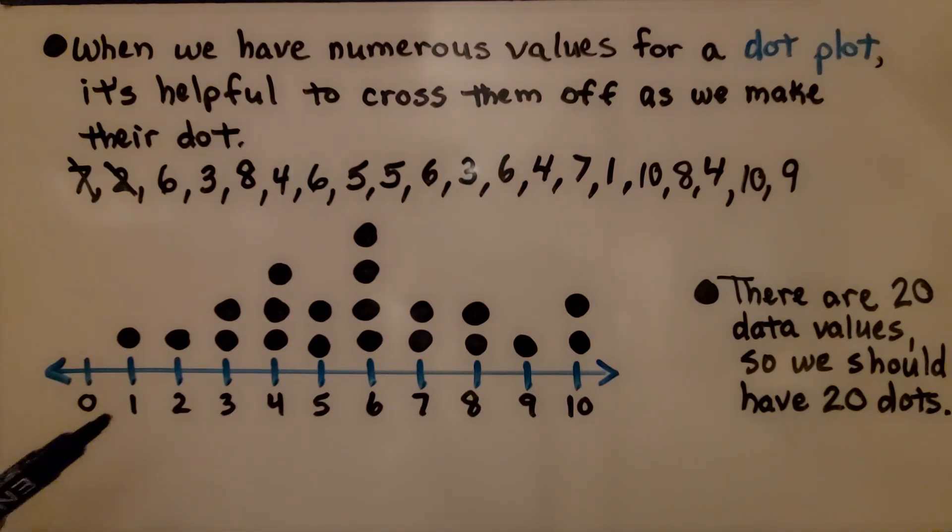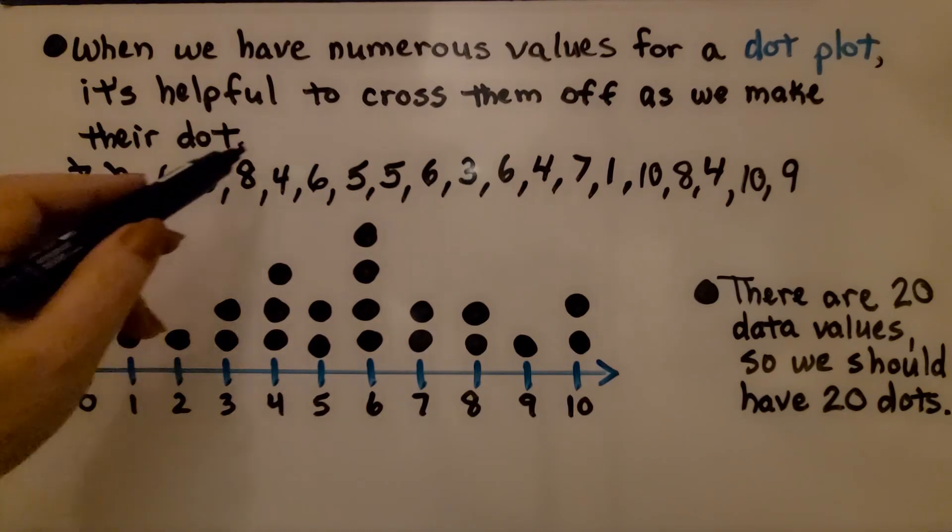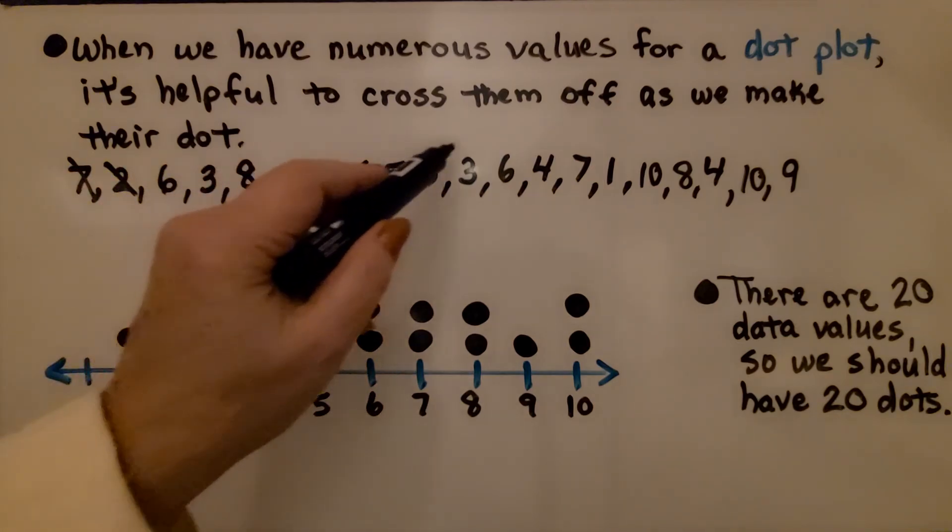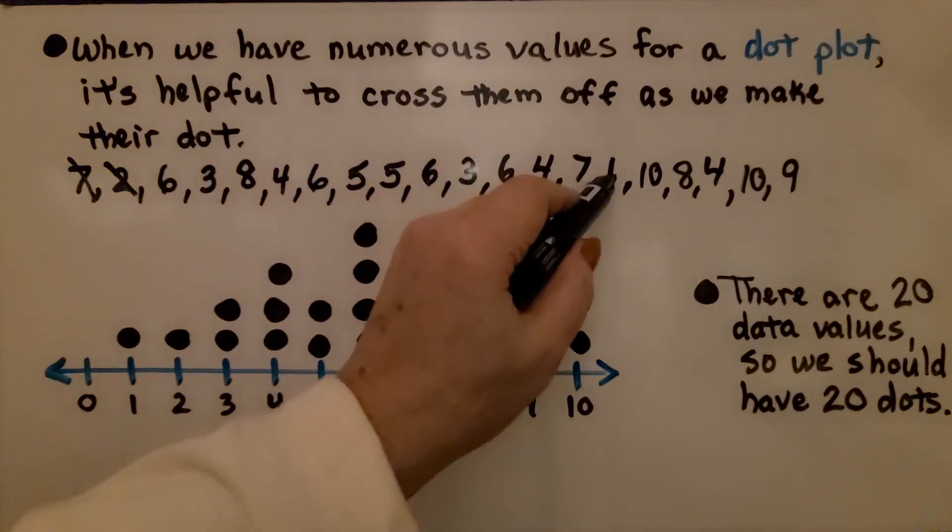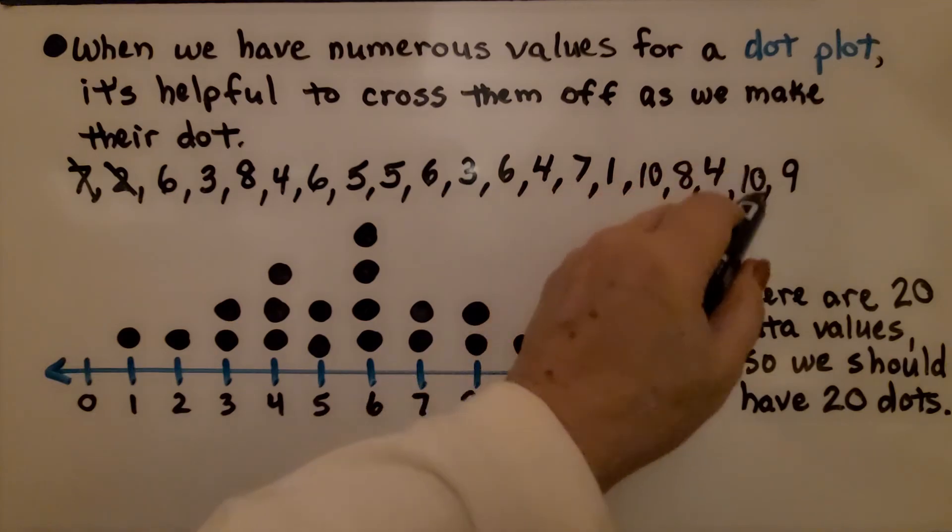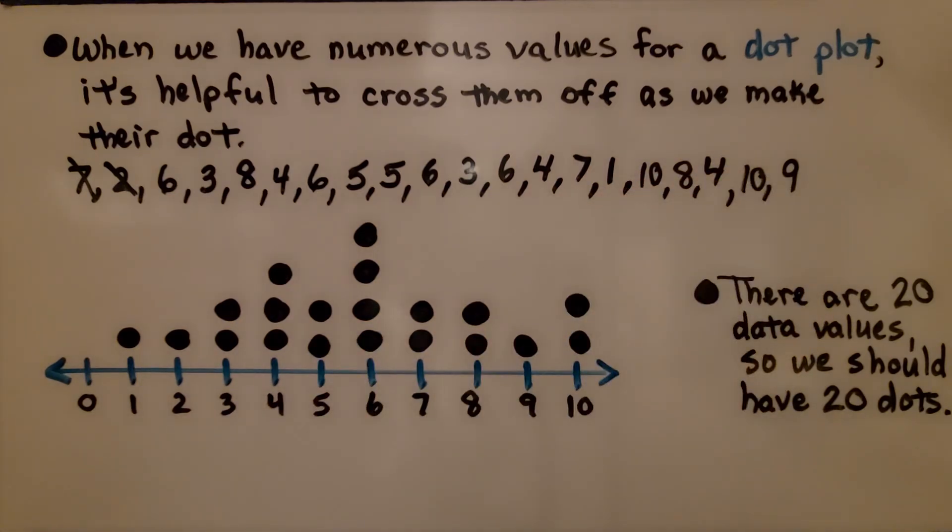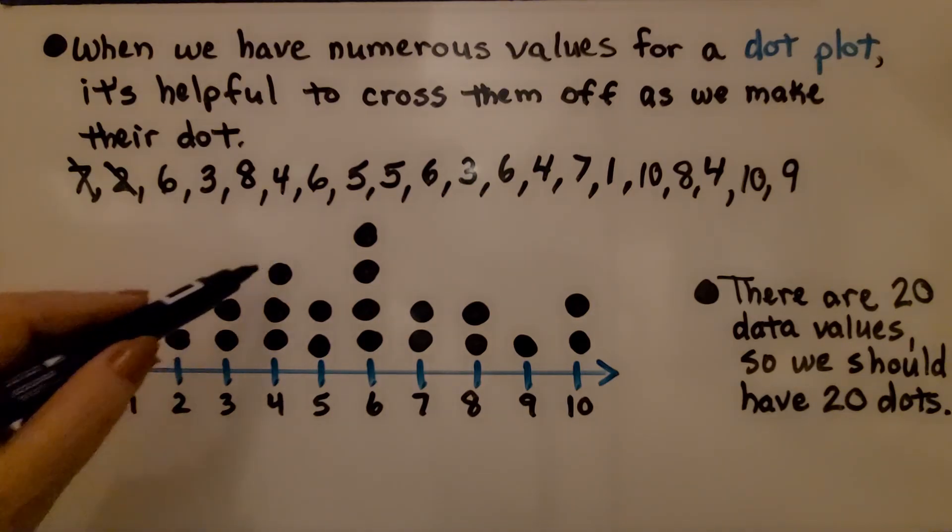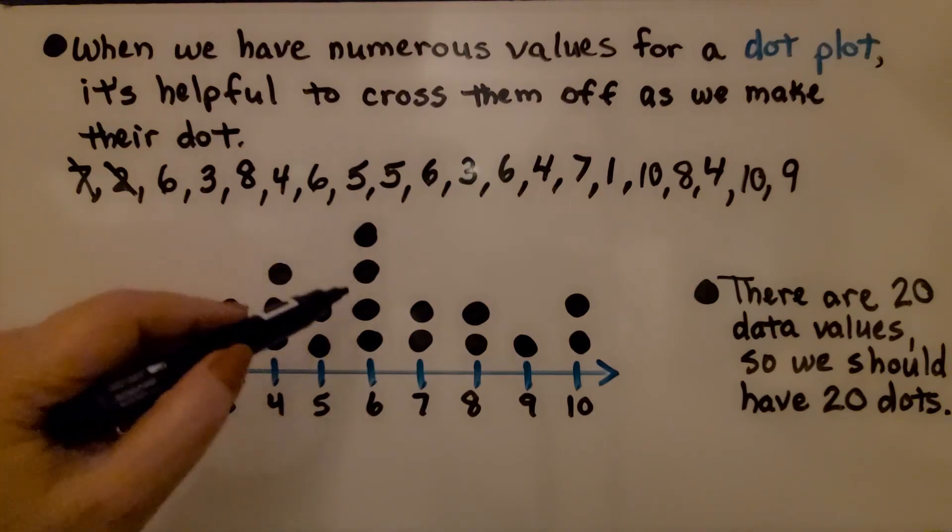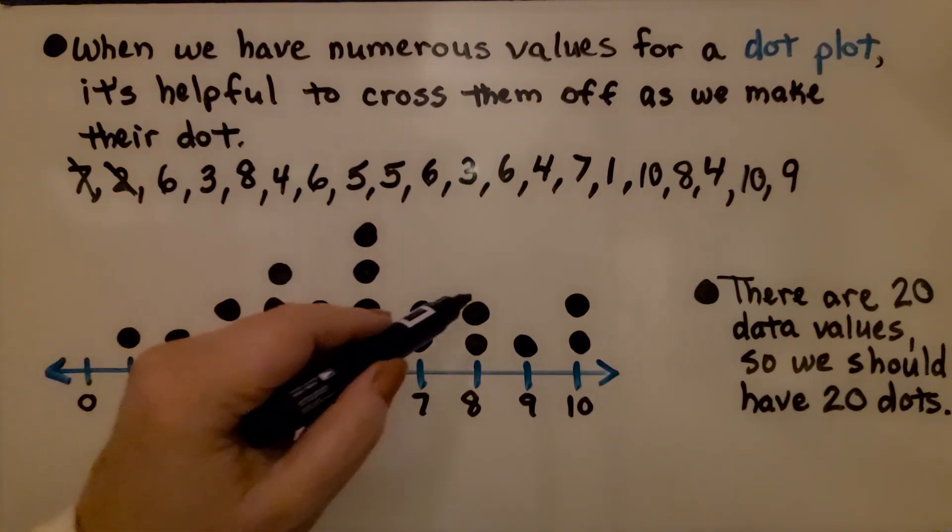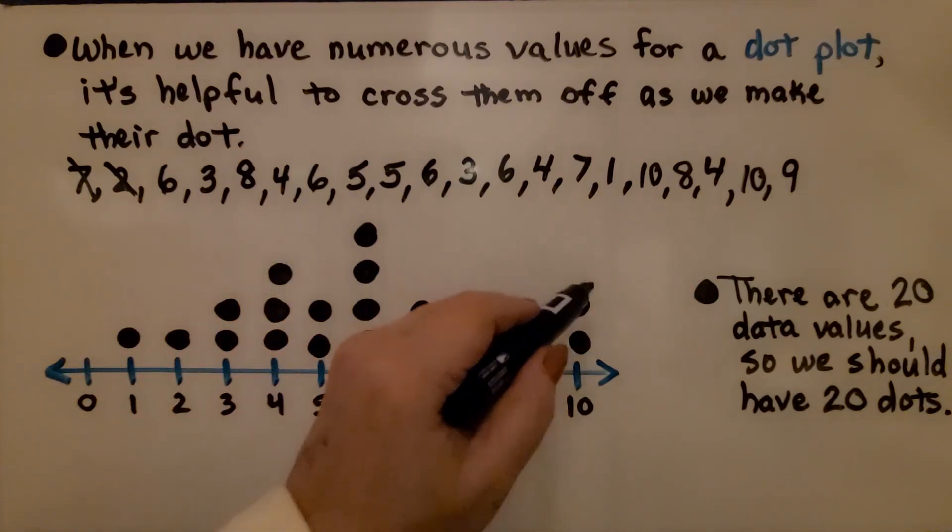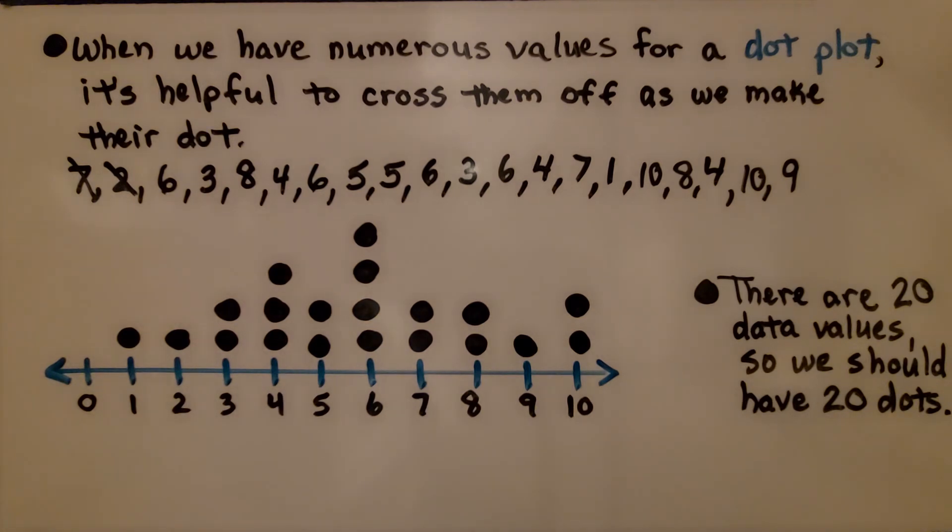Then we can count 1, 2, 3, 4, 5, 6, 7, 8, 9, 10, 11, 12, 13, 14, 15, 16, 17, 18, 19, 20. There's 20 data values. We should have 20 dots. [Counting again: 1, 2, 3, 4, 5, 6, 7, 8, 9, 10, 11, 12, 13, 14, 15, 16, 17, 18, 19, 20.] Yep, we had 20 data values. We have 20 dots. It should be correct.